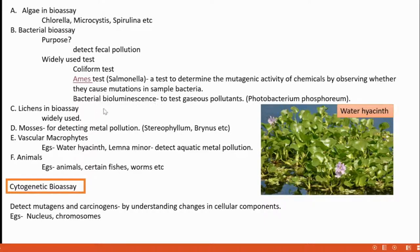Bacterial bioluminescence: certain bacteria like Photobacterium phosphoreum can produce bioluminescence when certain gaseous pollutants are present. Lichens are also commonly used in bioassay. Mosses are used for detecting metal pollution — examples include Stereophyllum and Brinus. Vascular macrophytes used in bioassay include water hyacinth and Lemna to detect aquatic metal pollution. Certain fishes and birds are also considered for bioassay.